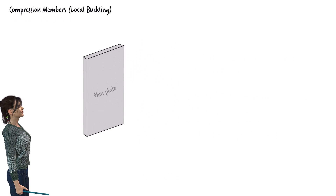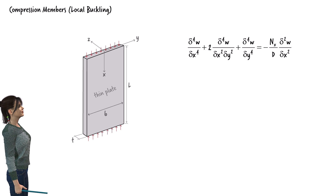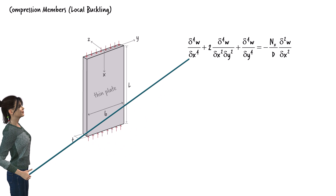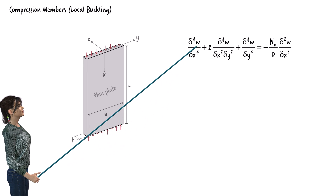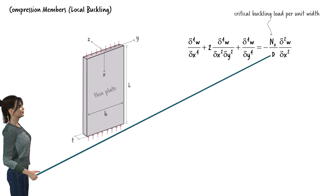Let's start with an overview of the formulation that underlies local buckling. Consider a thin plate in compression — most standard steel sections are composed of thin plates. The general equation that describes the deflection of such a plate can be written as follows. In this equation, delta is the partial derivative operator, w is the deflection function, N_x is the critical buckling load per unit width of the plate, and D is the stiffness term.